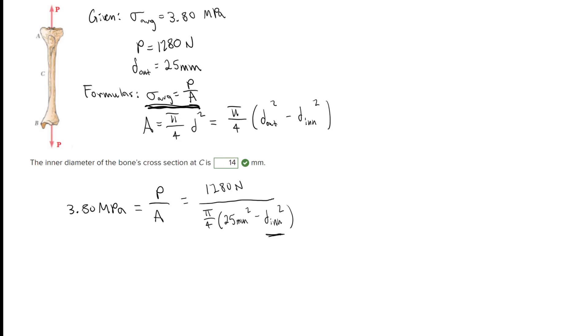We're solving for this inner diameter here, so what we can go ahead and do is multiply over this side and divide this average stress on this side. We know that one megapascal is equal to one newton per millimeter squared, so we're going to use this conversion to get our units in millimeters.